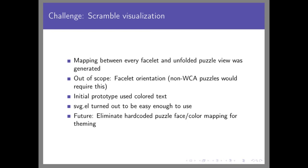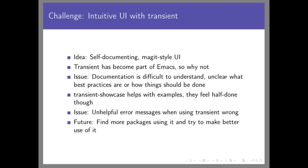The next challenge was building a beautiful, intuitive UI with `transient`. I chose it because it's self-documenting and Magit-style, and since transient has become part of Emacs there's really no reason not to try it. The problem is the documentation is very abstract and high-level — hard to figure out how to do specific things. I found a transient showcase with examples but they don't feel finished or realistic. I got plenty of unhelpful error messages when using it incorrectly. I managed to figure it out but plan to find more real examples as an executable reference.